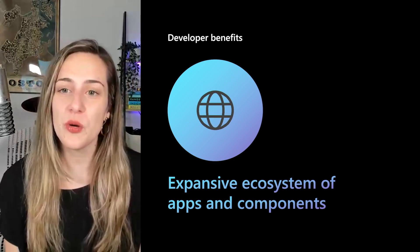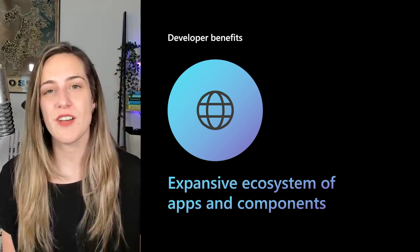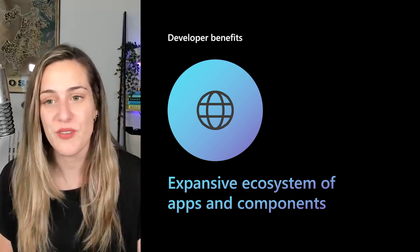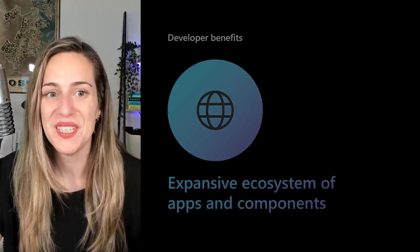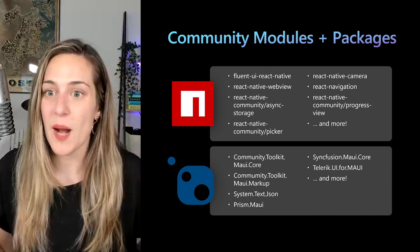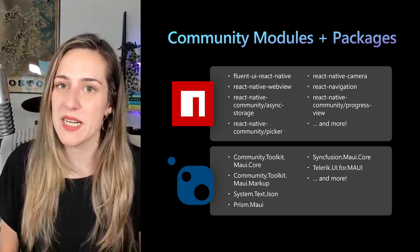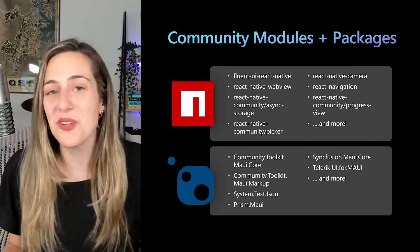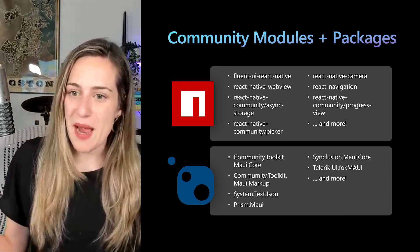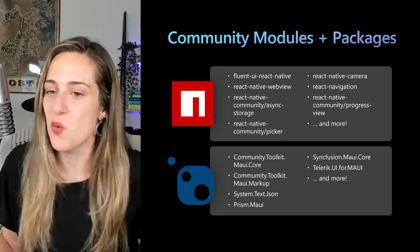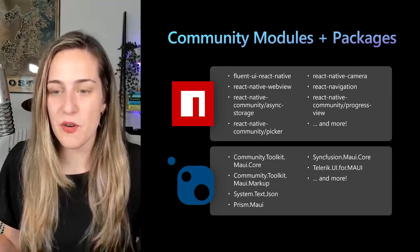The third thing that makes both platforms compelling is the mature component ecosystems backing them. Those developer community statistics are reflected by the sheer number of modules and packages you can add to supercharge your apps. If you're in the JavaScript community, you're familiar with NPM; for .NET, there's NuGet. There are tons of community-created modules on NPM for React Native, ranging from basic UI controls like a picker to more complex solutions like async storage. Any NuGet package for .NET 6 and beyond will work with MAUI, and there are already tons of controls, app frameworks, and toolkits on NuGet for MAUI-specific use cases.